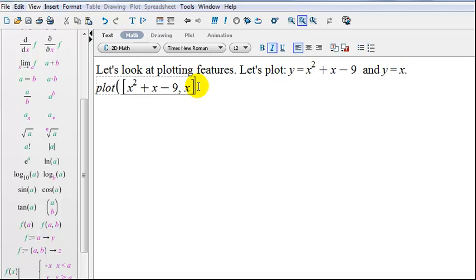And then comma to tell Maple we're going to do a second curve. Let's pause here for a moment. We said hey Maple, I want you to plot y equals x squared plus x minus 9 and I want you to plot y equals x. I close off my square brackets and now I want you to plot this from x going from negative 10 to 10 and y going from negative 10 to 10.